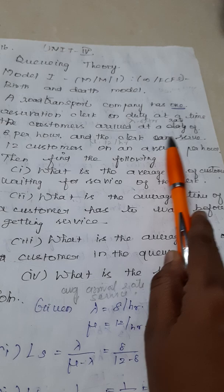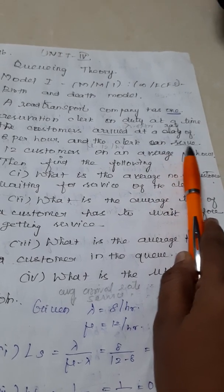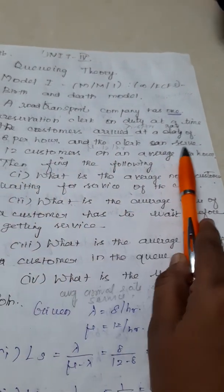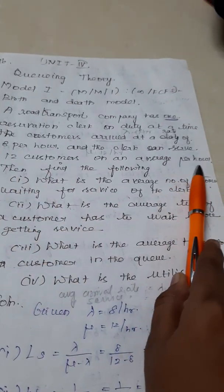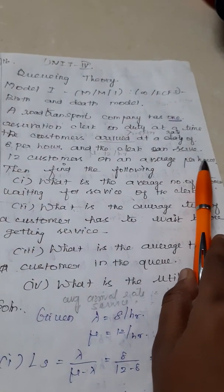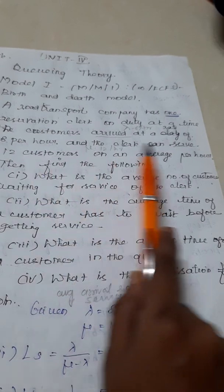Likewise, the clerk can serve, which talks about the service time. Number of customers getting served is 12 per unit of time per hour. So you express mu equals 12 per hour.